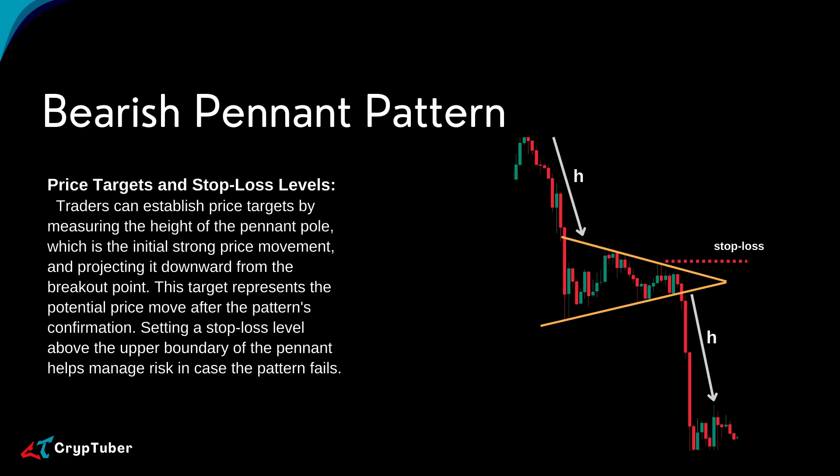Traders can establish price targets by measuring the height of the pennant pole, which is the initial strong price movement, and projecting it downward from the breakout point. This target represents the potential price move after the pattern's confirmation. Setting a stop-loss level above the upper boundary of the pennant helps manage risk in case the pattern fails.